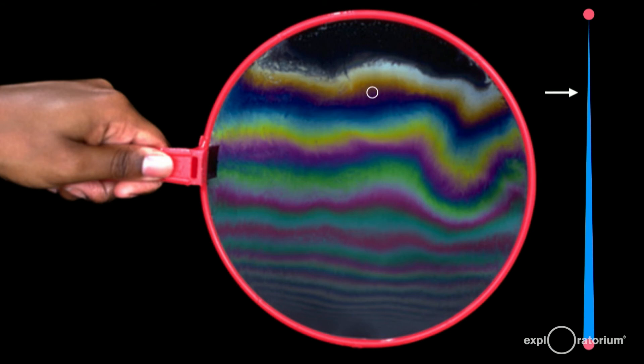A little further down, the bubble is a bit thicker, cancelling green light. White minus green is magenta.